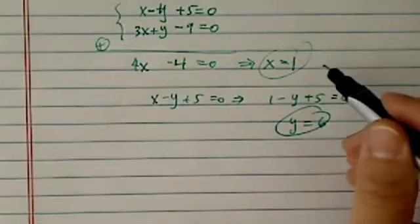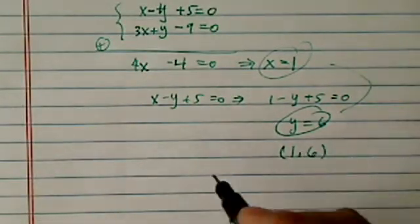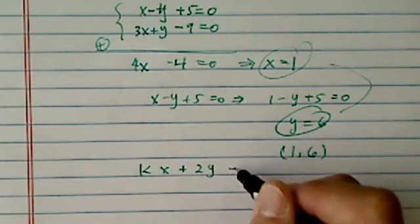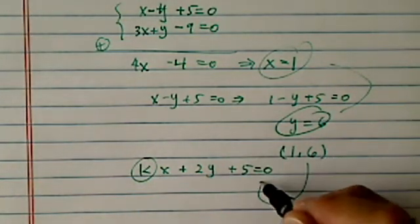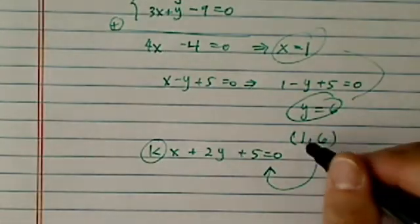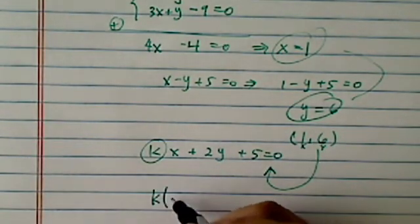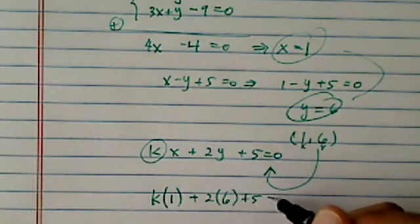Since we're given those two points at this one point, 1 and 6, is also on a point for that kx plus 2y plus 5 equal to 0. In order to find k, we're going to substitute this point in there, in that x is here and y is here. So k times 1 plus 2 times 6 plus 5 equal to 0.